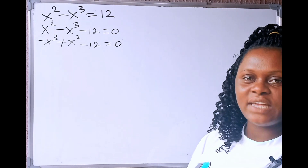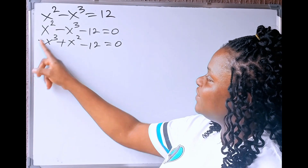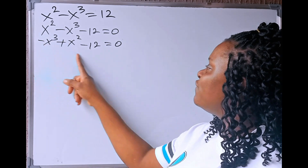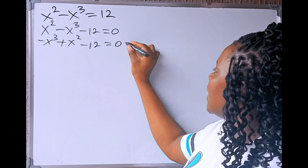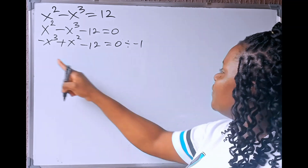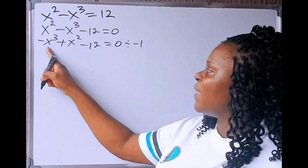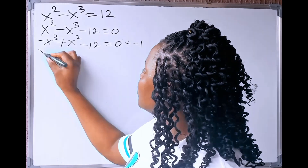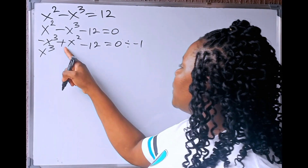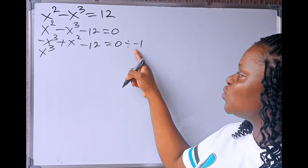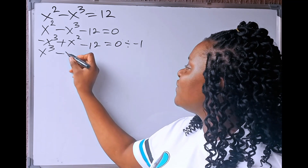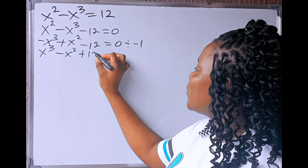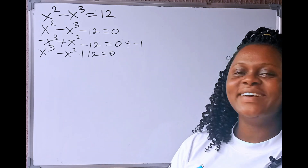Now, also note that it is improper for us to leave this negative sign here. For us to remove this negative sign, we are going to divide through by minus 1. So, minus x cubed divided by minus 1 will give us positive x cubed. Plus x squared divided by minus 1 will give us negative x squared. Now, minus 12 divided by minus 1 will give us plus 12, and this is equals to zero.